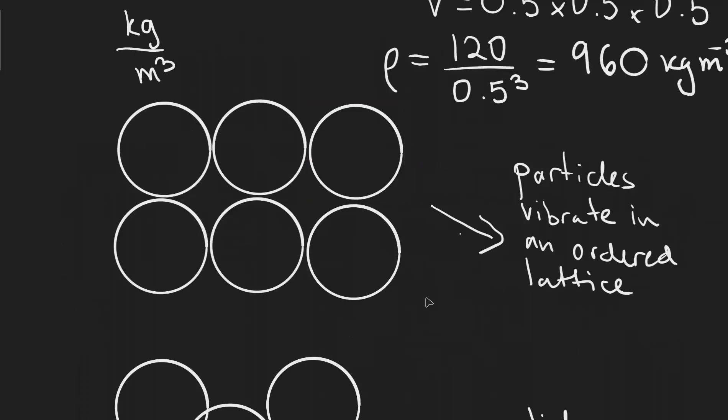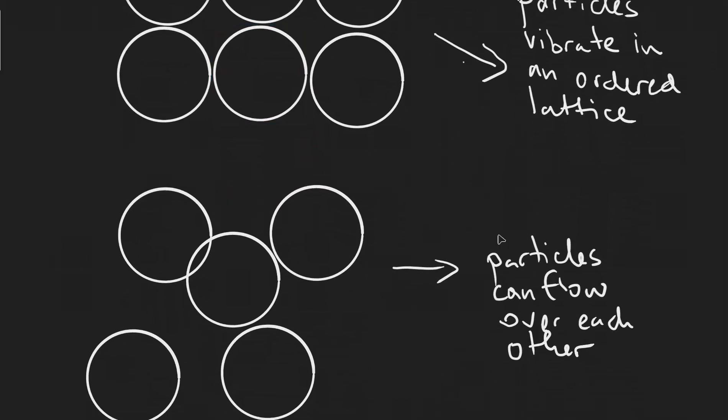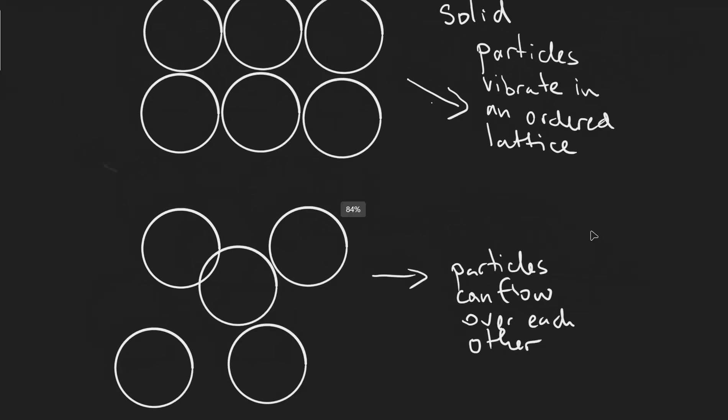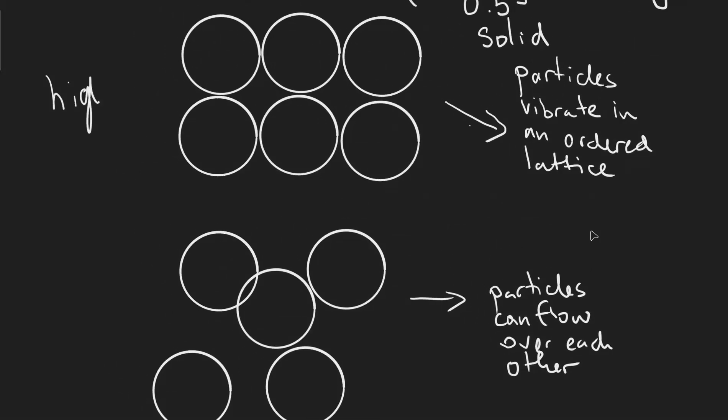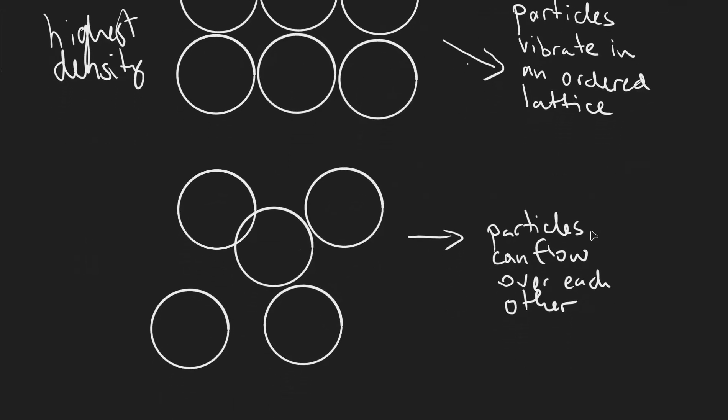The idea of density can be used to explain the different states of matter, and you should be able to recreate these in an exam. Let's start off with a solid. In a solid, the particles vibrate in an ordered lattice. This type of configuration is actually known as a lattice. Now moving on to a liquid, the density now becomes lower. So in a solid, this will have the highest density, and then the density just becomes a little bit lower when we're talking about the liquid. The idea about a liquid is the particles can now flow over each other, and they're not vibrating in a fixed location, unlike in a solid.